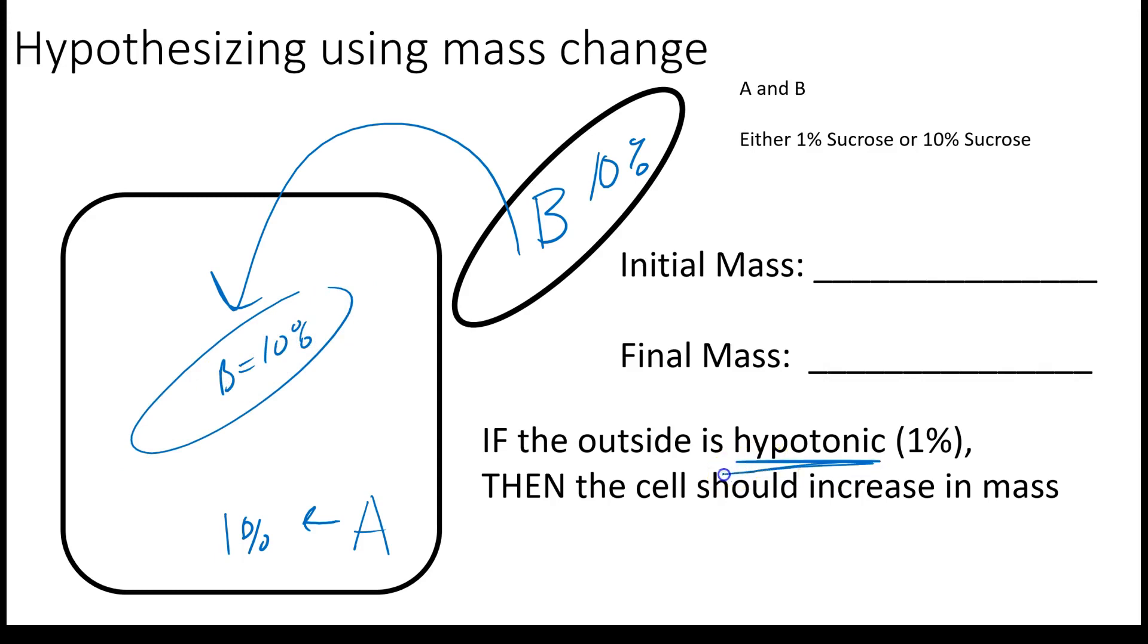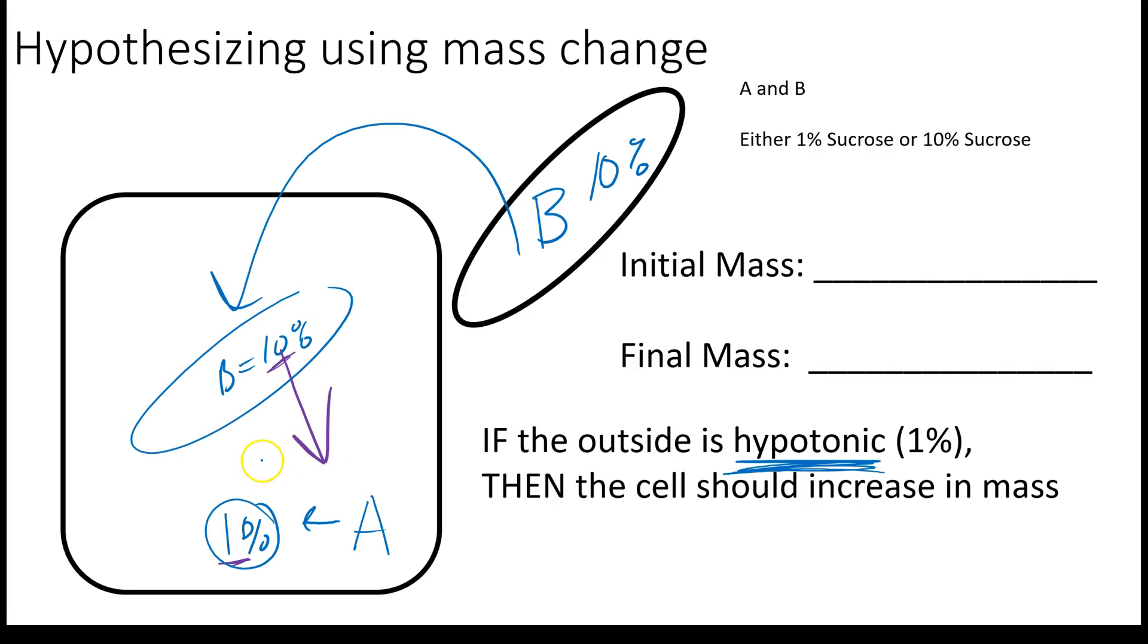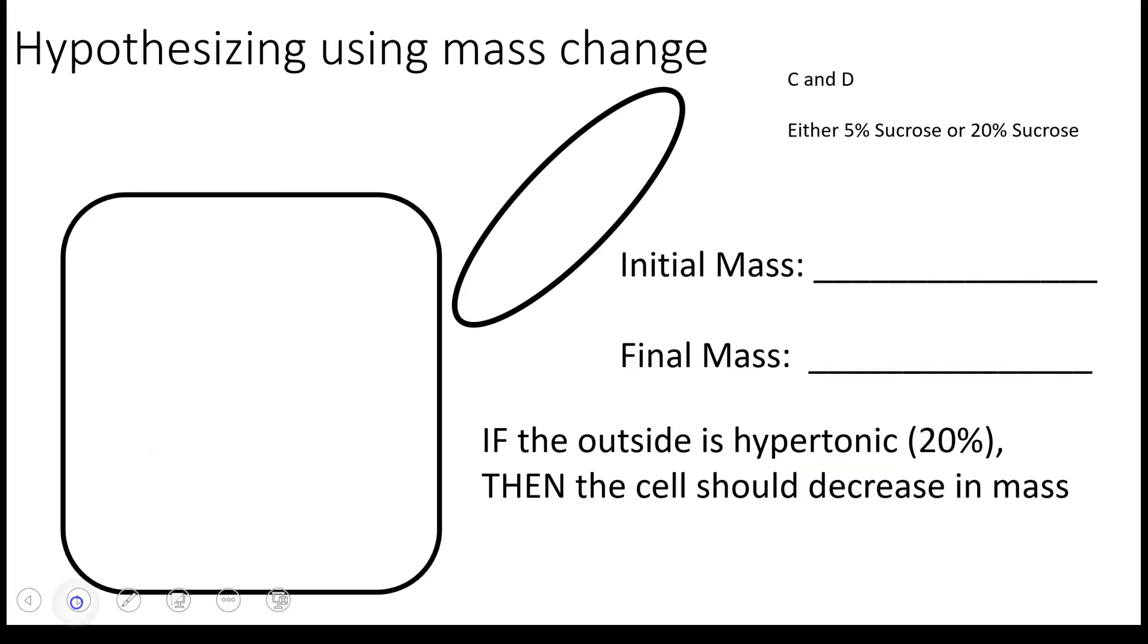Well, now we have our cell being surrounded by a hypotonic solution of 1%. If that's the case, your solute is going to want to come out. That's fine, it'll go from high to low through diffusion. But what will happen with the free water? Remember, free water is higher where there's less solute, so here there'd be more free water. Water would go from high to low into the cell. That would result in a mass increase. So you see how you can confirm whether A is either 10% or 1% based on either mass increase or decrease.